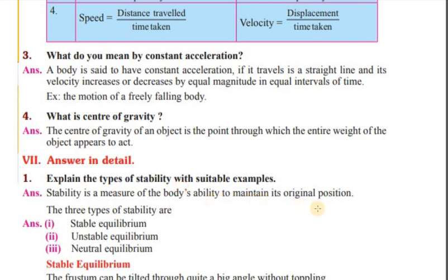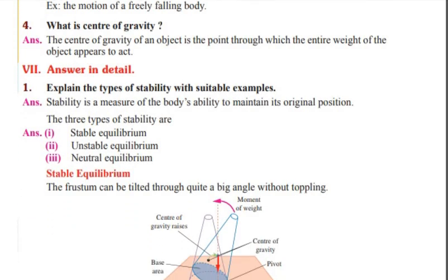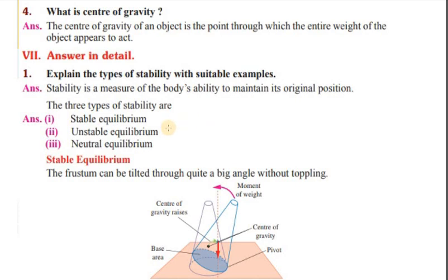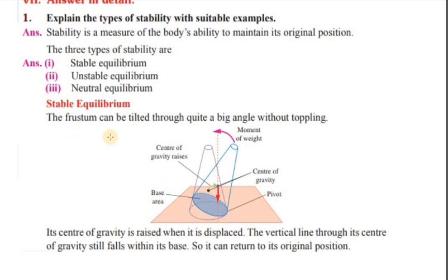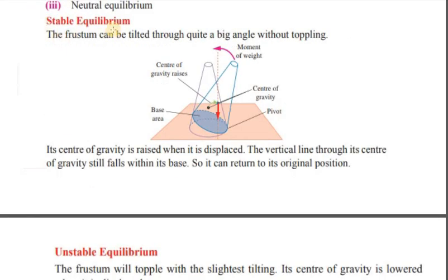Explain the types of stability with suitable examples. There are three types: Stable Equilibrium, Unstable Equilibrium, and Neutral Equilibrium. In stable equilibrium, the object can be tilted through quite a big angle without toppling. The center of gravity is raised when it is displaced, and the vertical line through its center of gravity still falls within its base, so it returns to its original position.